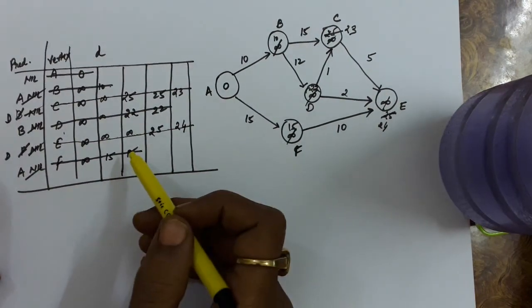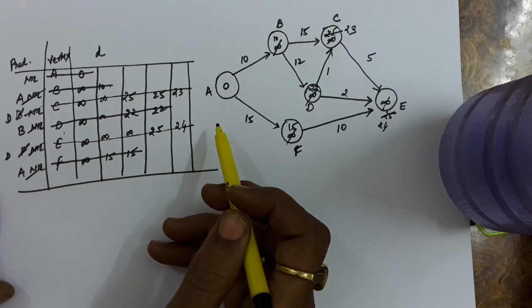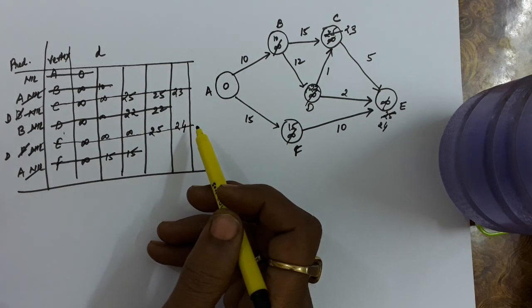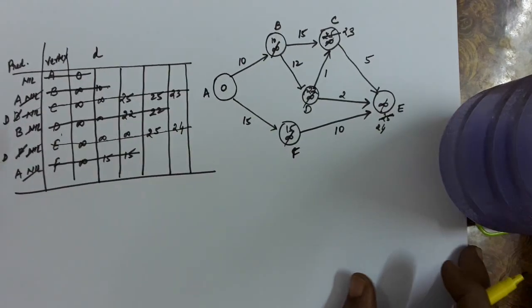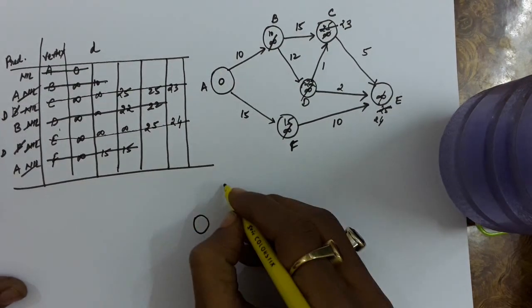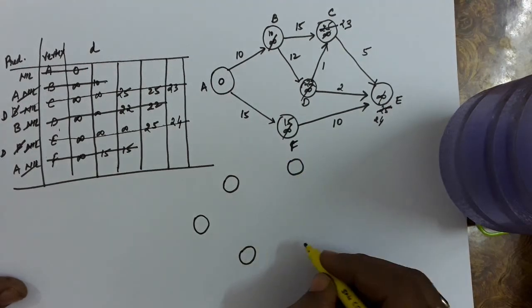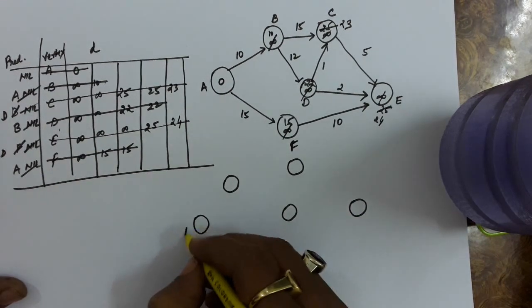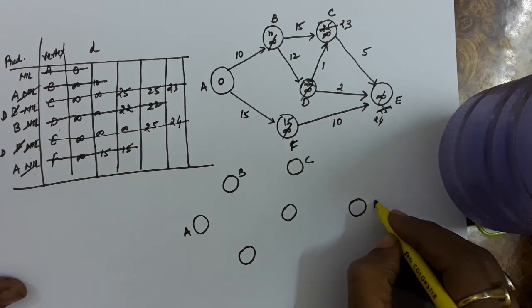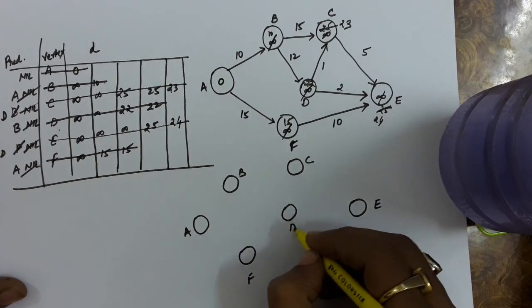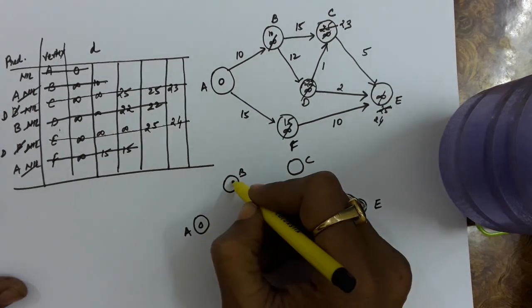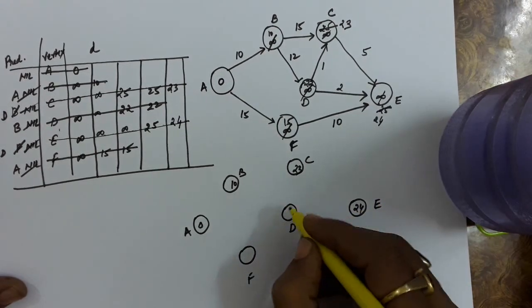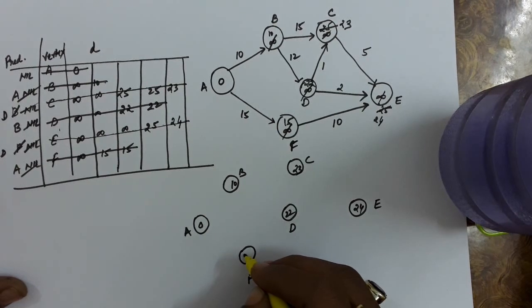After deletion of this vertex, the queue becomes empty. We think of updating vertices only if there are some vertices remaining in the queue. So the final results: distance of A is 0, distance of B is 10, distance of C is 23, distance of E is 24, distance of D is 22, and distance of F is 15.